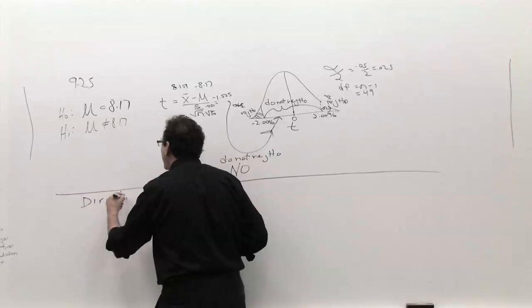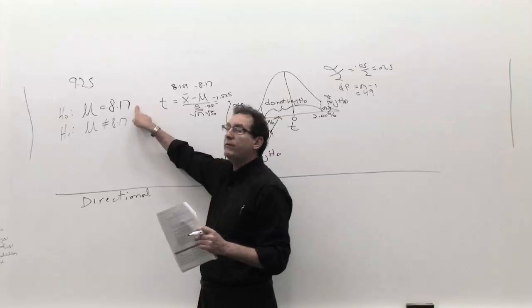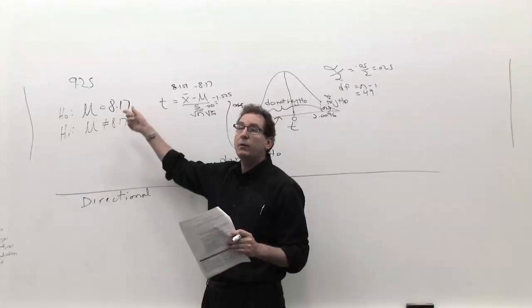Directional test because there's a direction in the problem. In other words, we don't care if the example is bigger than 8.17, it presented a problem. If it was lower than 8.17, it presented an equally bad problem.